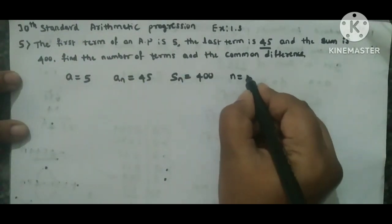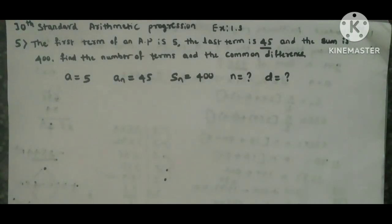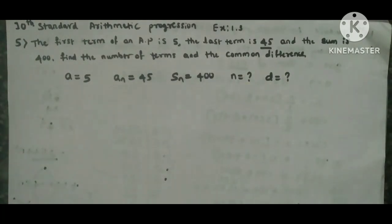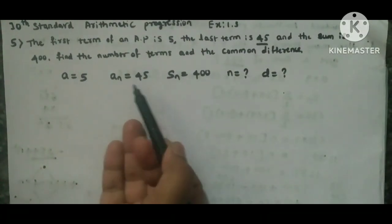If you have d, then we can go for that Sn = n/2 × (2a + (n-1)d) formula. But here we don't have d value. We have only a, an, and Sn. So we have to go for one more Sn formula, that is Sn = n/2 × (a + an).